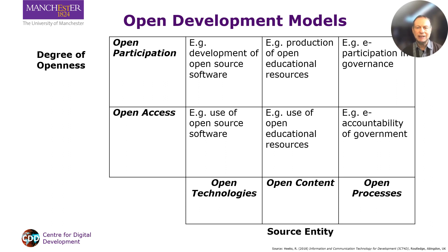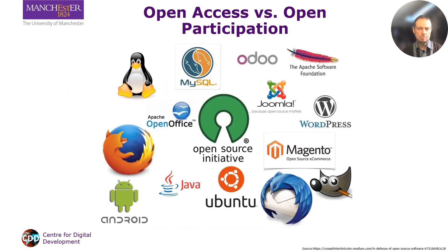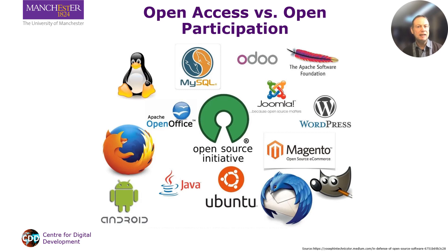The horizontal dimension identifies three different things that can be open: technology, content, and processes. To explain the vertical dimension, let's take open source software. Open access means you have free open ability to make use of the open source software, while open participation means you have free open ability to make and change the open source software. So open access means the user is a digital consumer and in open participation the user is a digital producer.